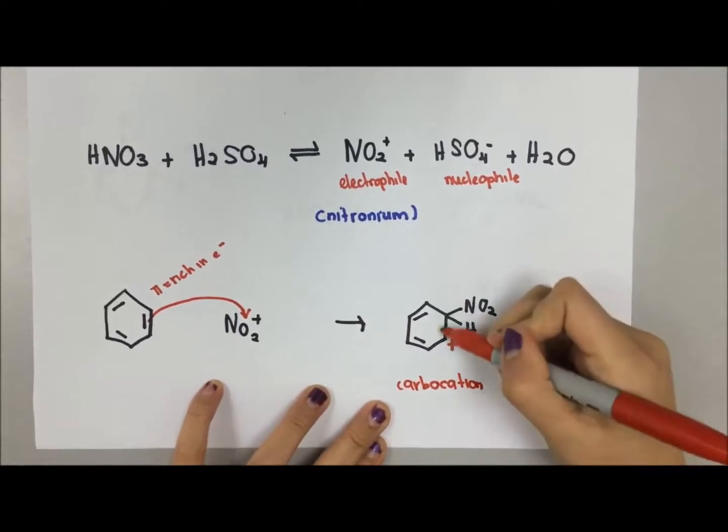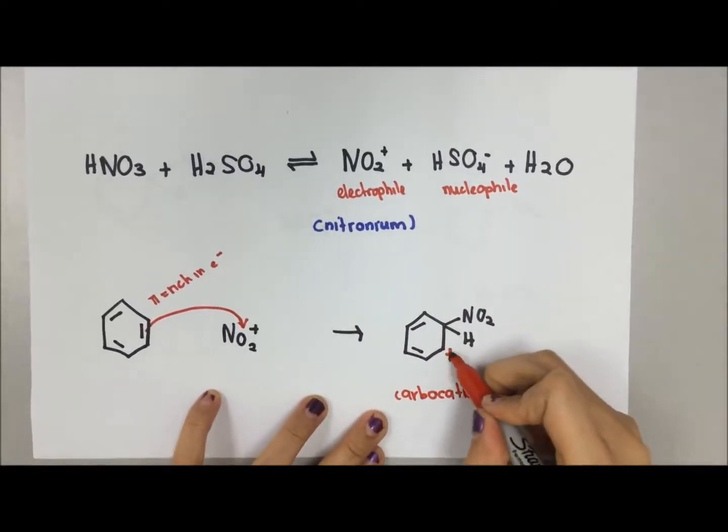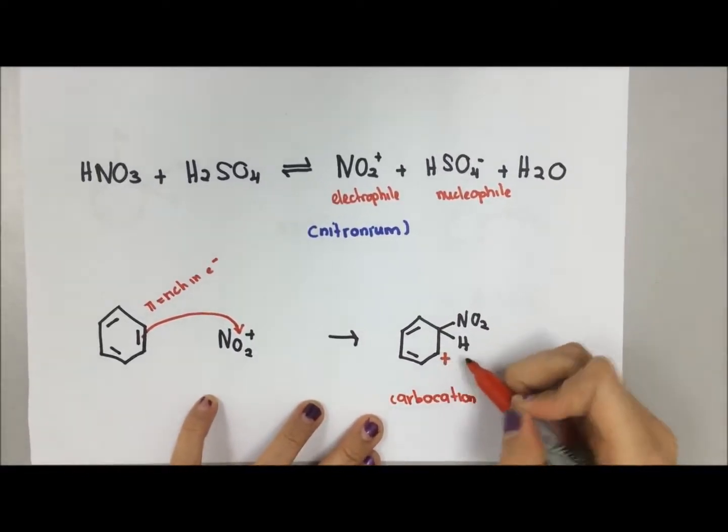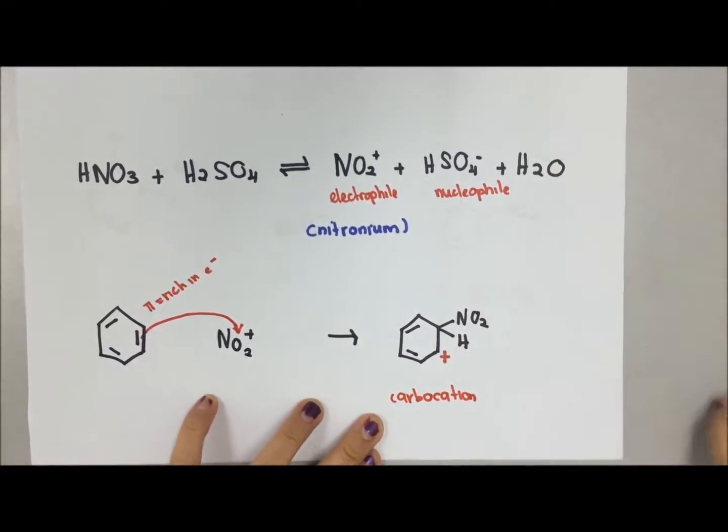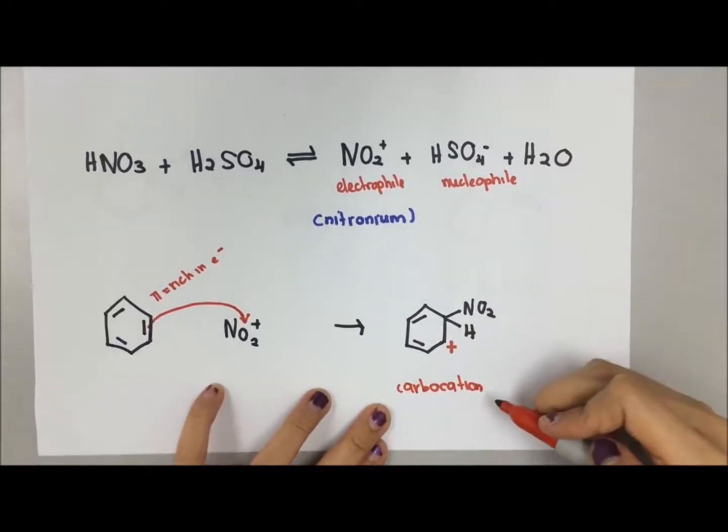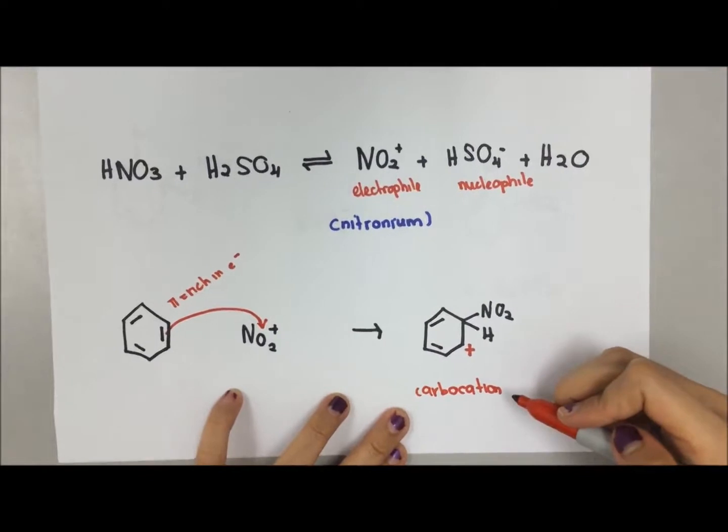You can see that the bond here has been missing - that's why we have a positive sign showing that it has lost an electron. For carbon cation, this structure is really not very stable, therefore we need to react with our nucleophile to gain back our aromaticity.